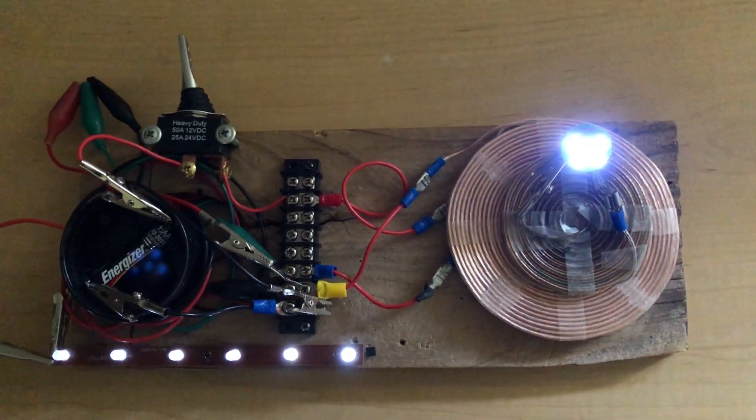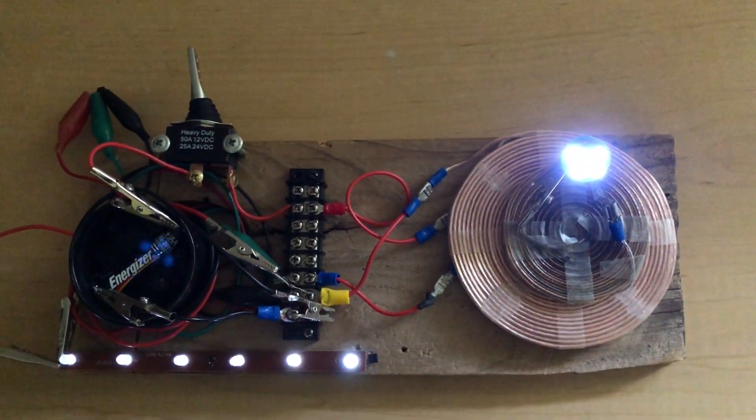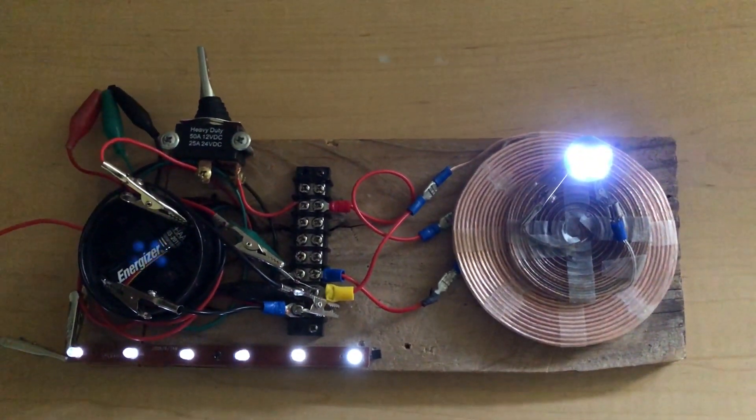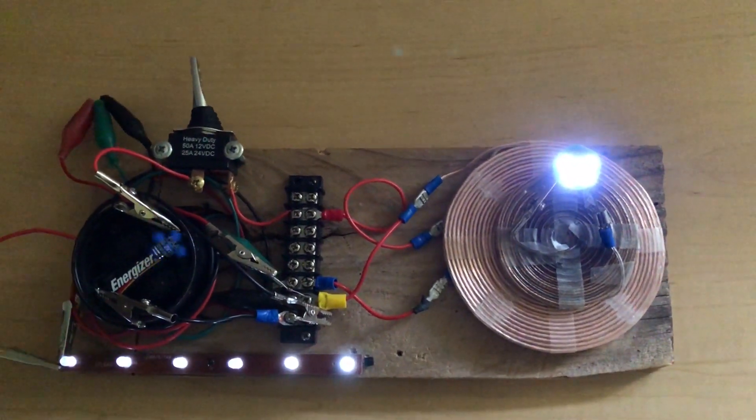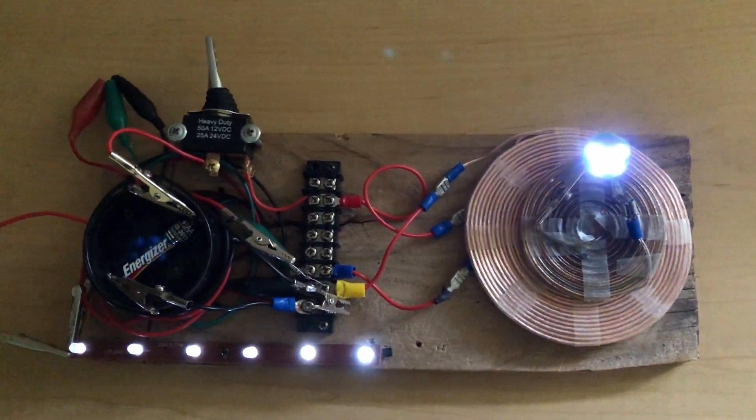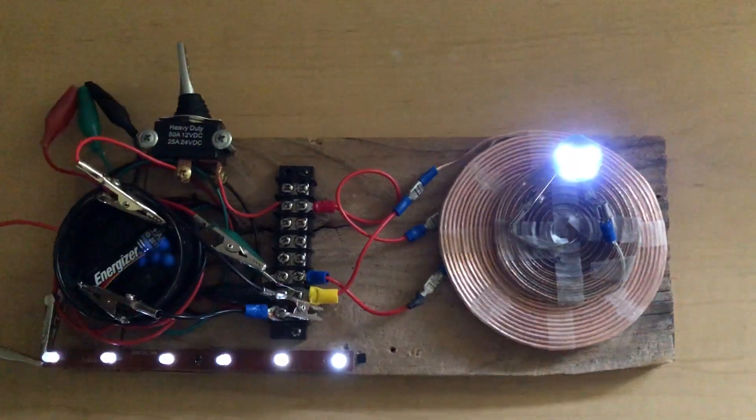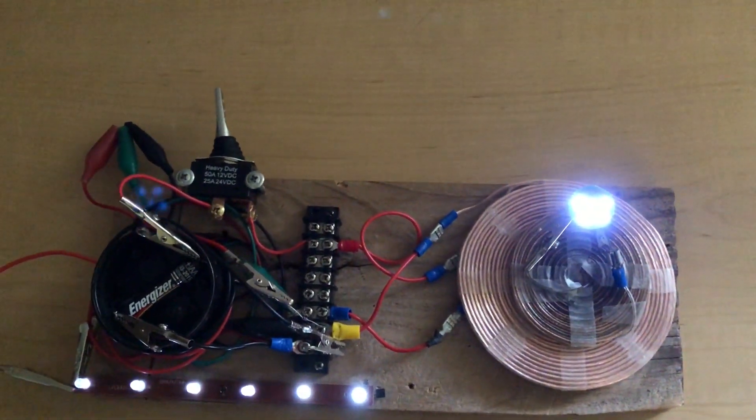So that brings the total count of LEDs being powered by this 1.5 volt battery to 6, 7, 8, 9, 10, 11.